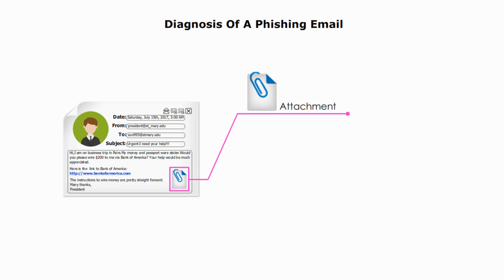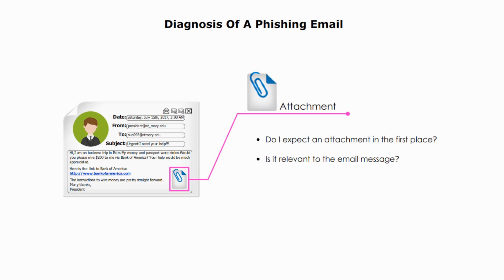Sometimes in emails, attackers ask you to open an attachment. The text could say something like 'please verify your account details,' 'confirm your payment information,' or 'your new policy,' just to name a few. Regarding the attachment, ask yourself several questions before you download it: Do I expect an attachment in the first place? Is it relevant to the email message? What is the file type? If you are curious, hover your cursor over the attachment — you should see the file type.